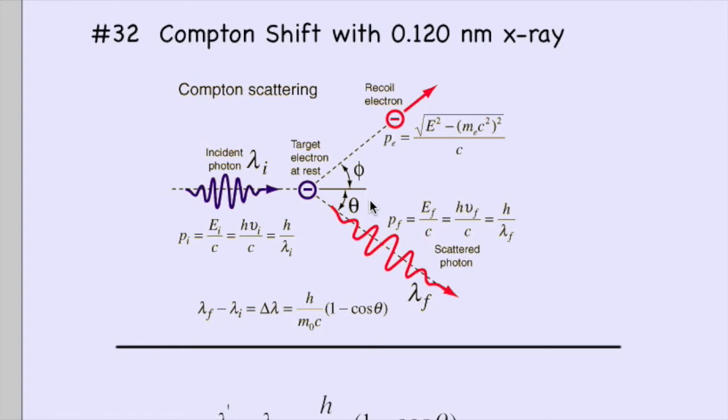Number 32: we can use our Compton shift equation that we discussed earlier. We have an incident photon that collides with an electron. I like this visual because it shows the photon changing to the red spectrum and an electron being kicked off. You've got theta for the photon and phi for the electron.